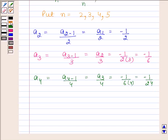By substituting n as 5 we get a₅ = a₅₋₁/5 and this is equal to a₄/5. a₄ = -1/24, so we have -1/24 × 5 and this is equal to -1/120.